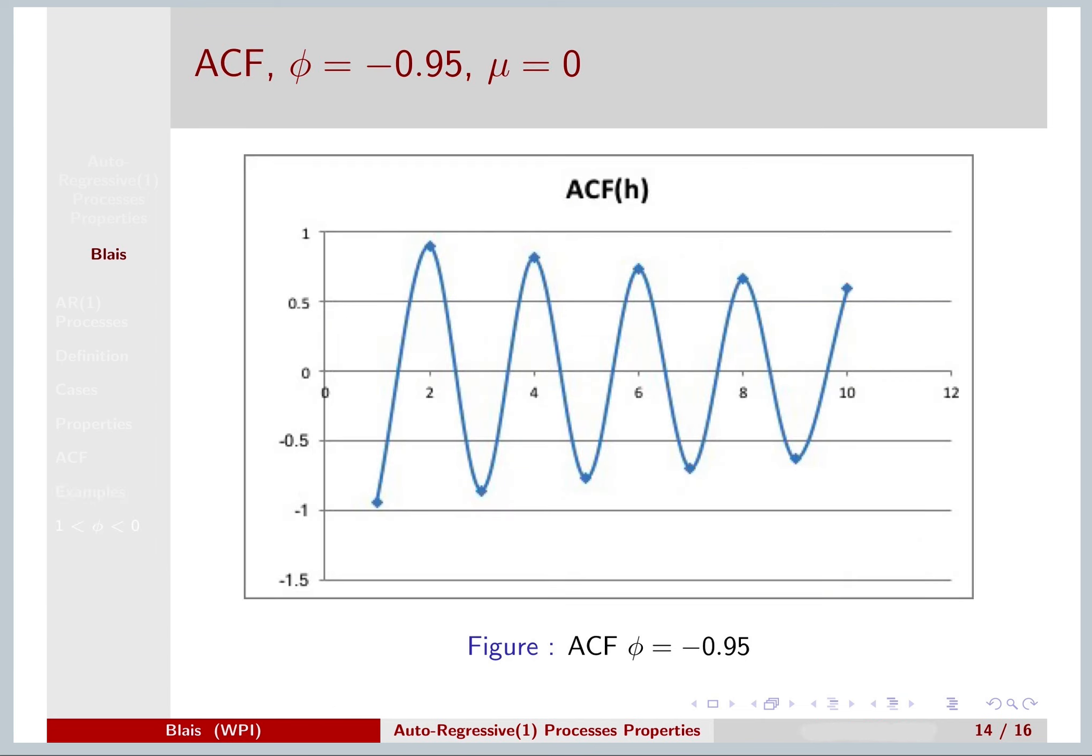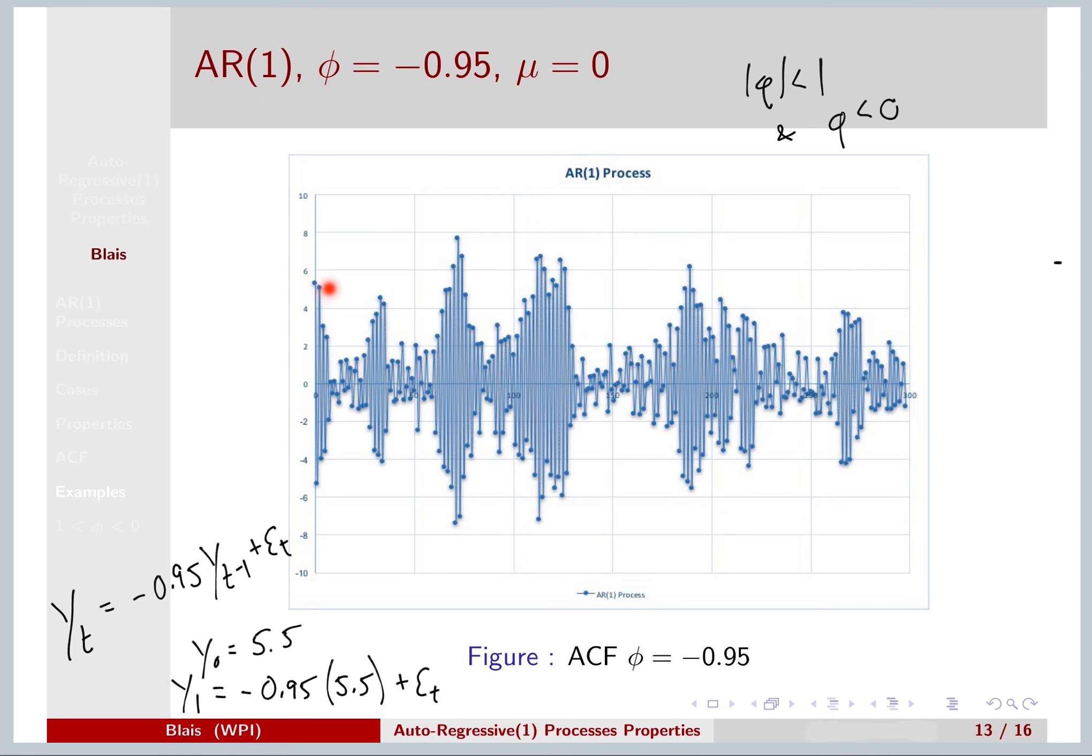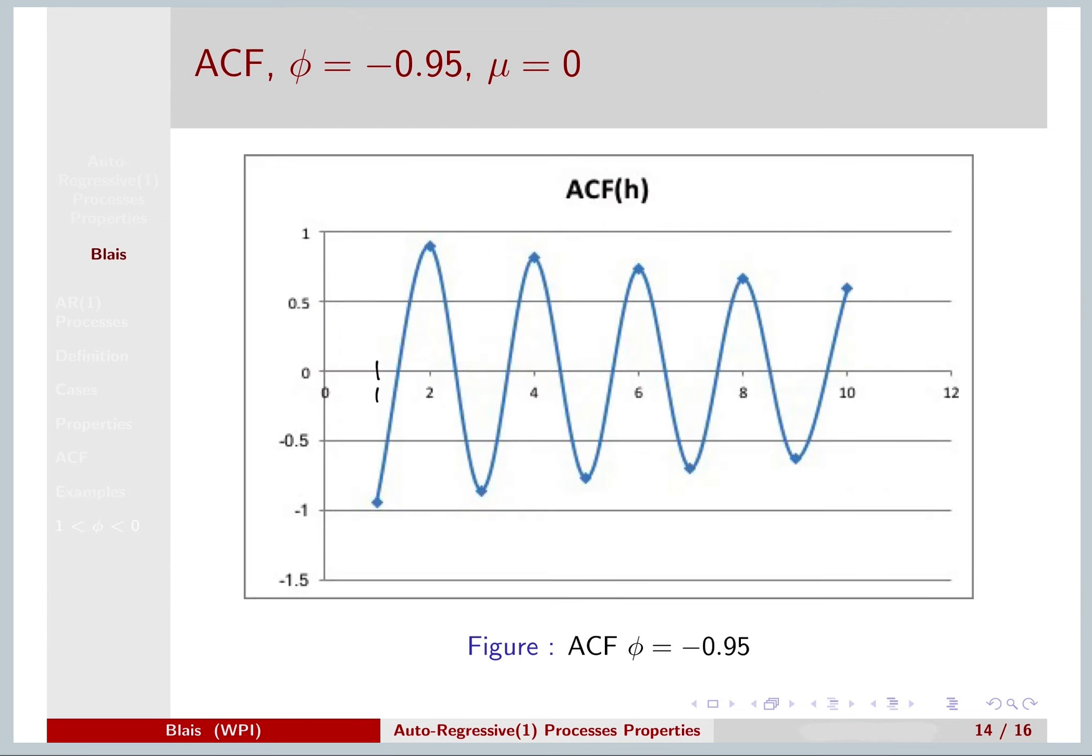And because of that, you get an interesting-looking autocorrelation function, which is depicted here. At lag 1, you have this autocorrelation close to negative 1. But at lag 2, because you have minus 1 times minus 1, the autocorrelation flips back up to being positive and large. The autocorrelation functions are kind of funny when you have a phi that is negative.